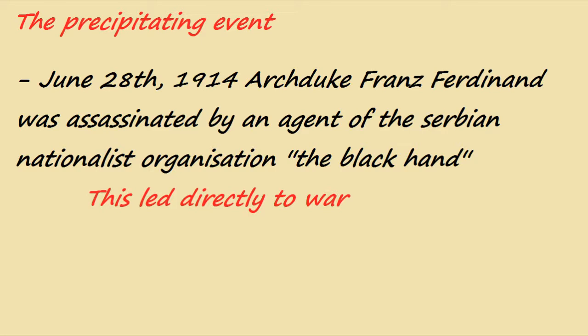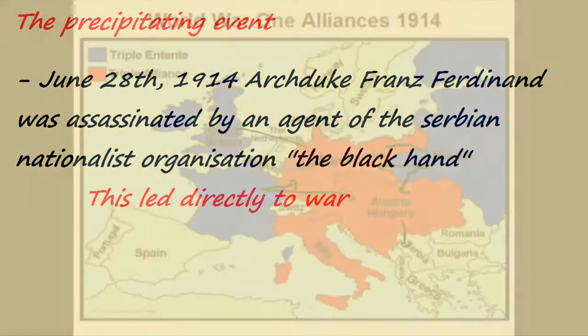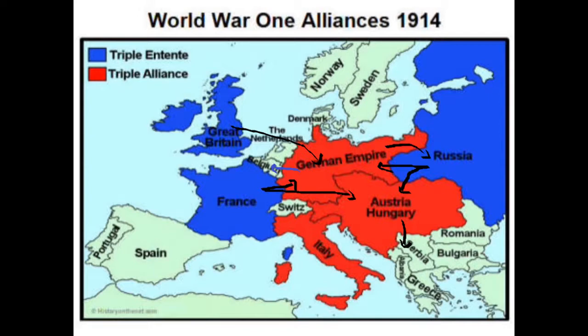After the assassination, Austria-Hungary declared war on Serbia. This is how the system of alliances started to work — not to keep peace, but to emerge war. Austria-Hungary declared war on Serbia; Russia, as an ally of Serbia, prepared to help Serbia; Germany then declared war on Russia because Germany is an ally of Austria-Hungary; France then declared war on Germany because France was an ally of Russia, and also on Austria-Hungary.